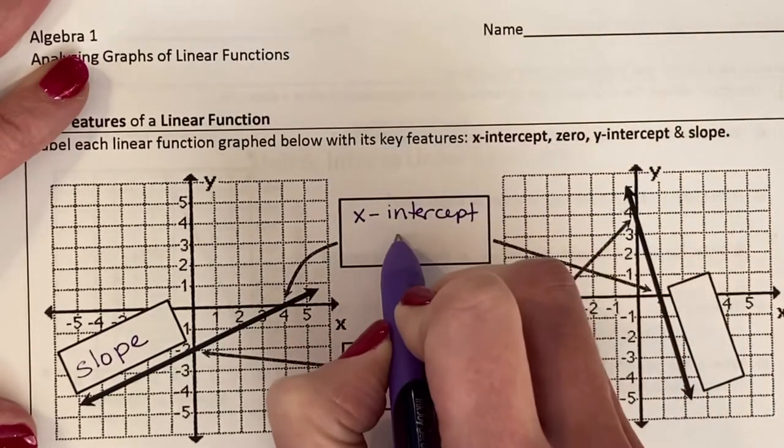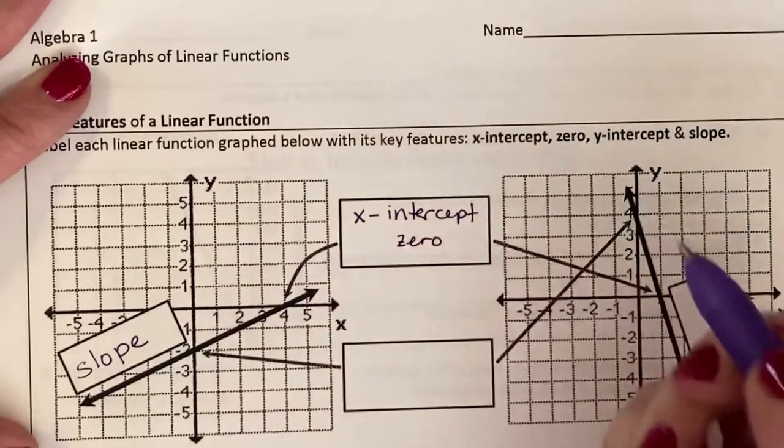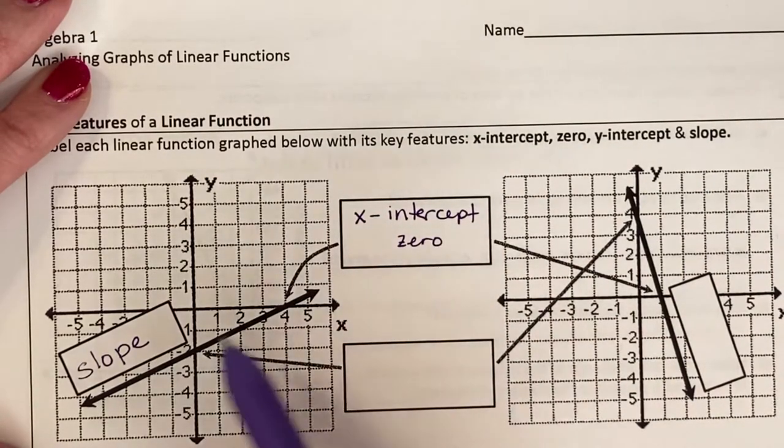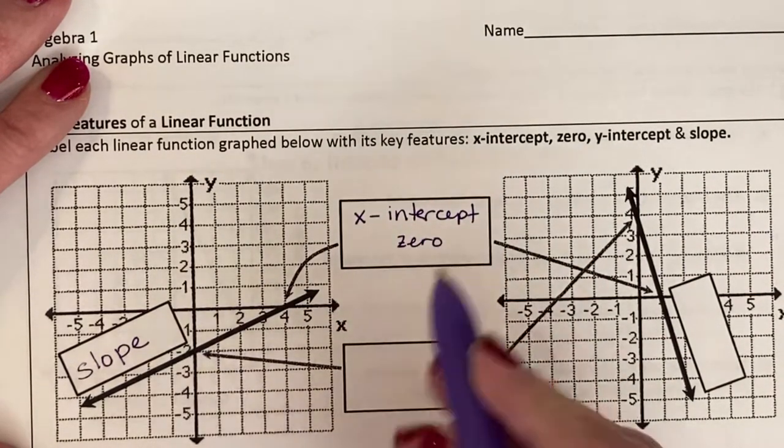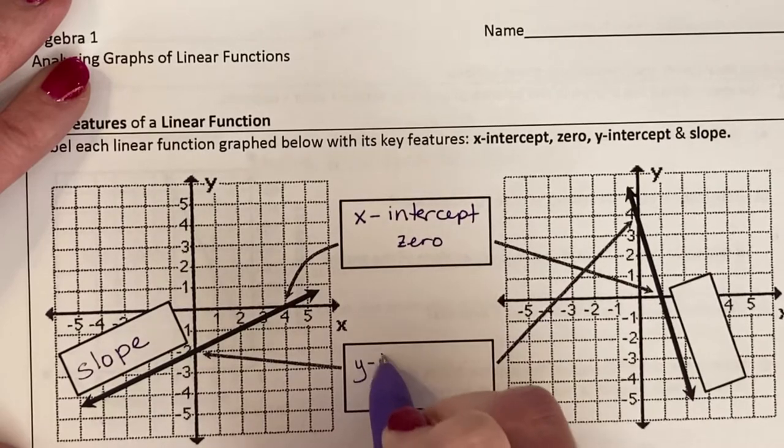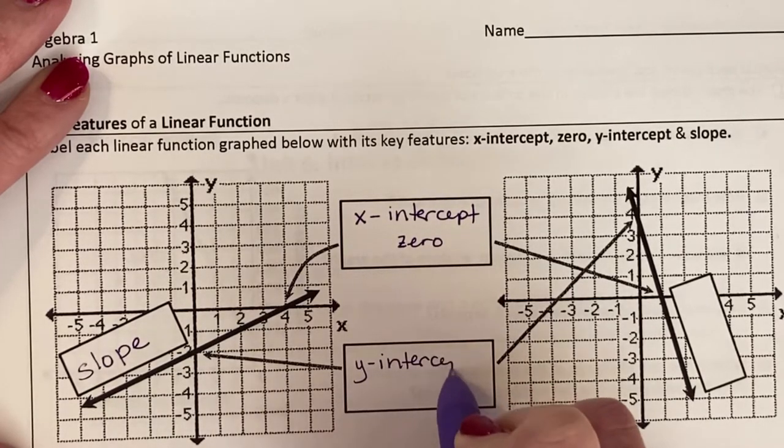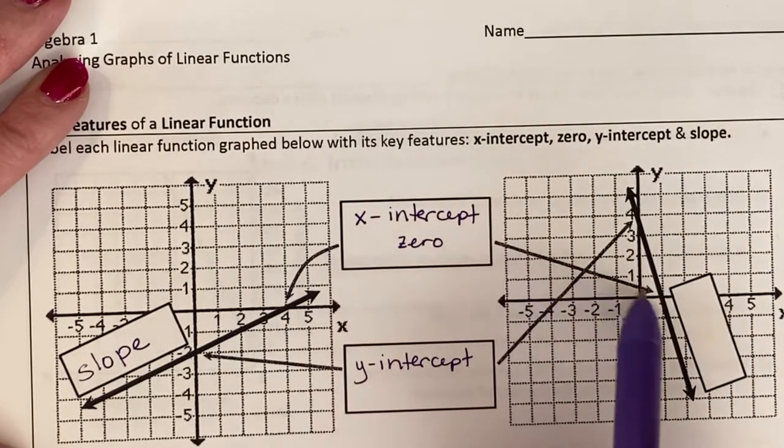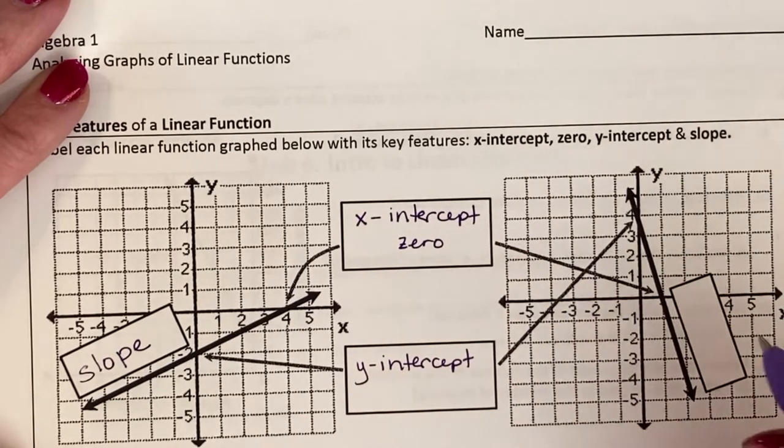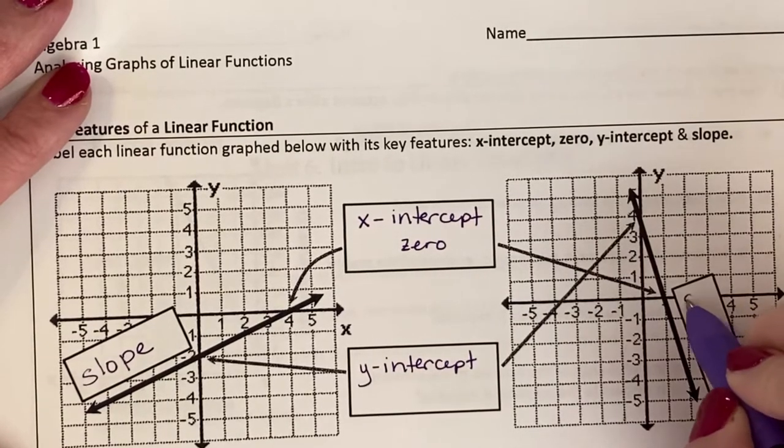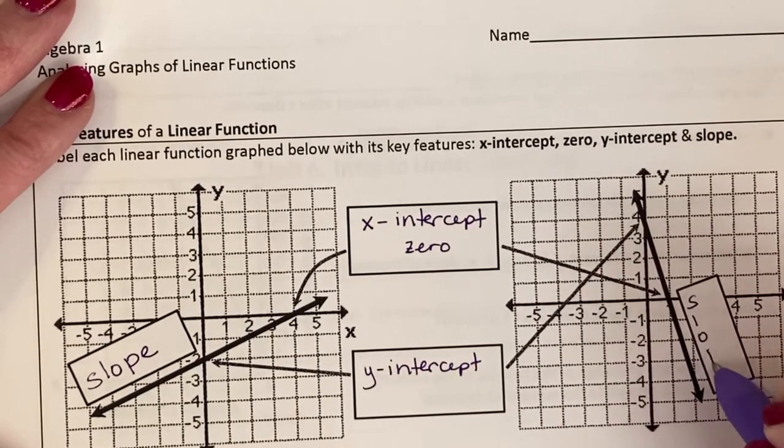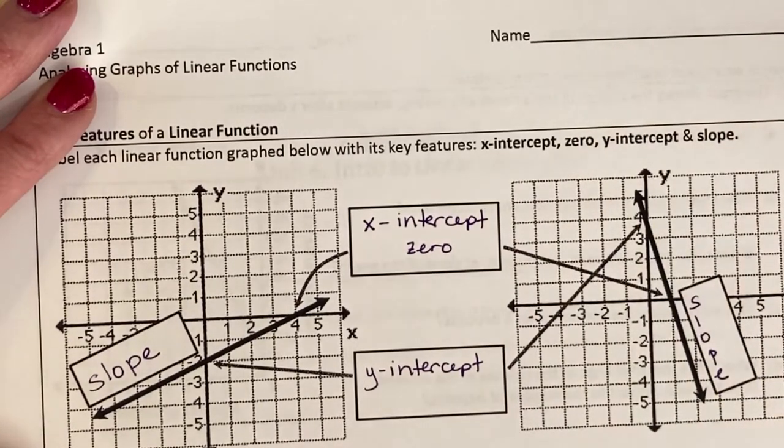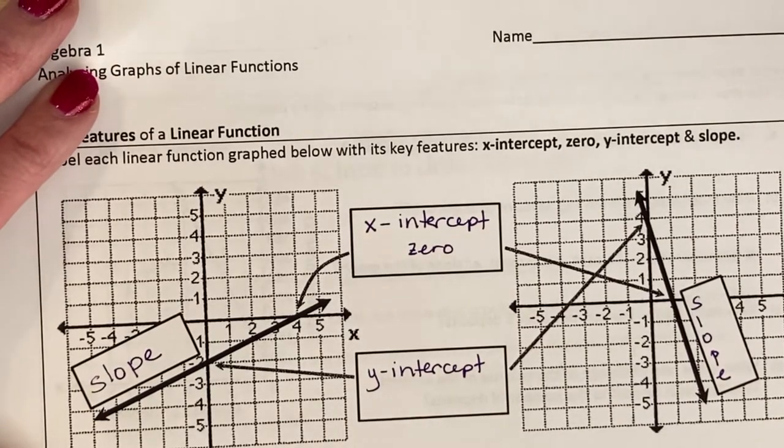It's also called the zero, but we're not really going to talk about why it's called the zero quite yet. This one right here is the y-intercept, where it crosses the y-axis. This is also the y-intercept. This is also the x-intercept. And this one would also be the slope of this line, negative and rather steep.